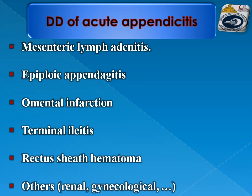The differential diagnoses of acute appendicitis include mesenteric lymphadenitis, epiploic appendagitis, omental infarction, terminal ileitis, and rectus sheath hematoma, among others such as renal and rheumatological causes. The renal and rheumatological causes are beyond the scope of this discussion.